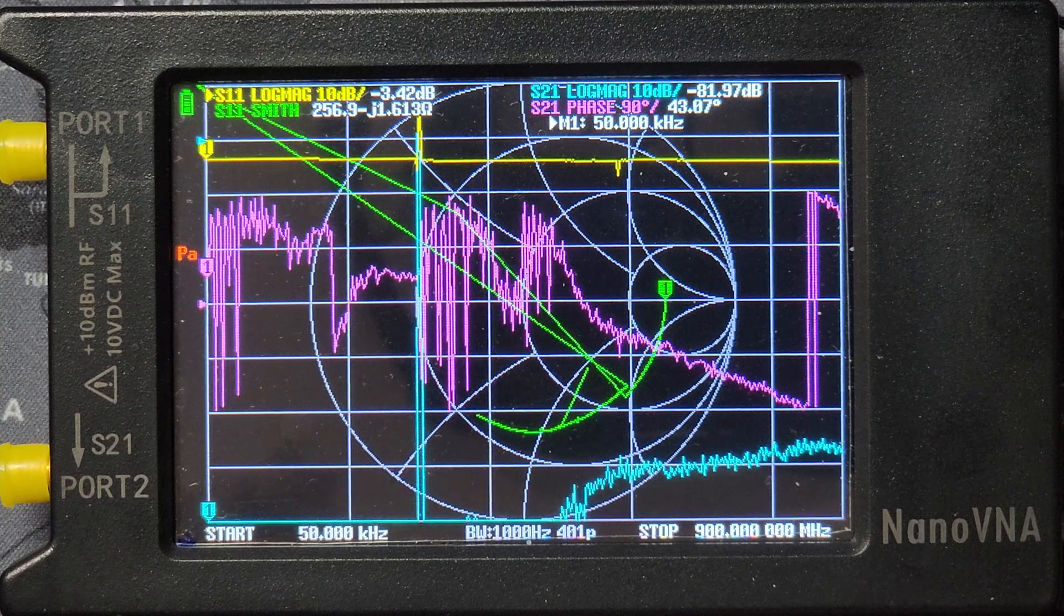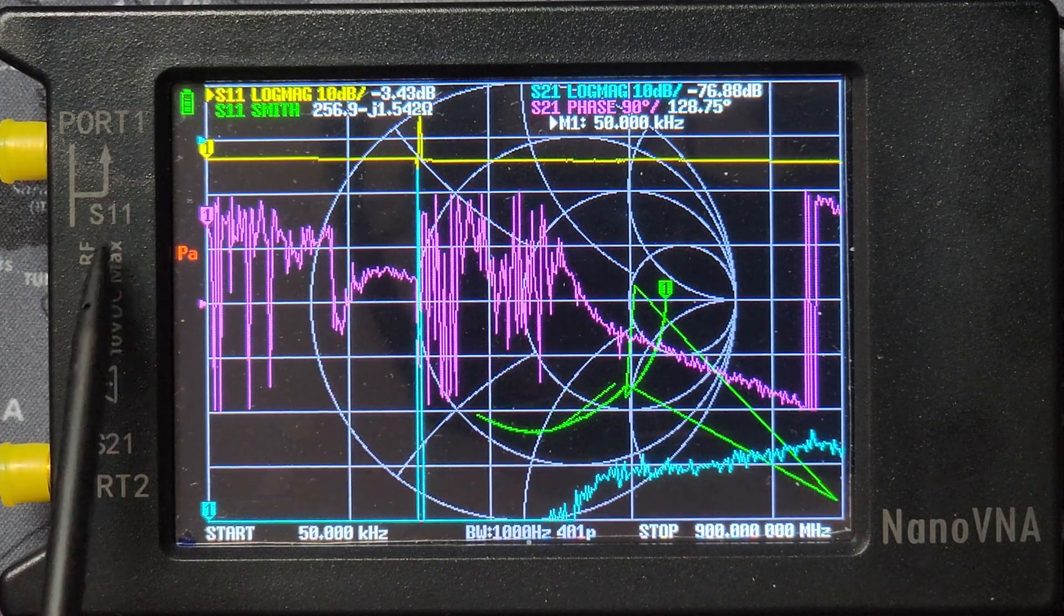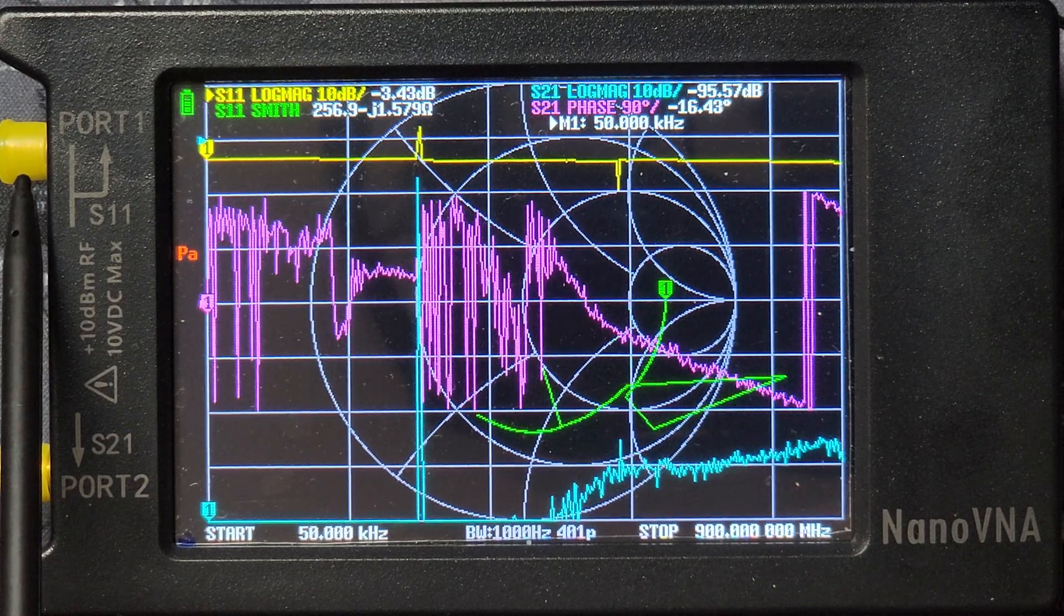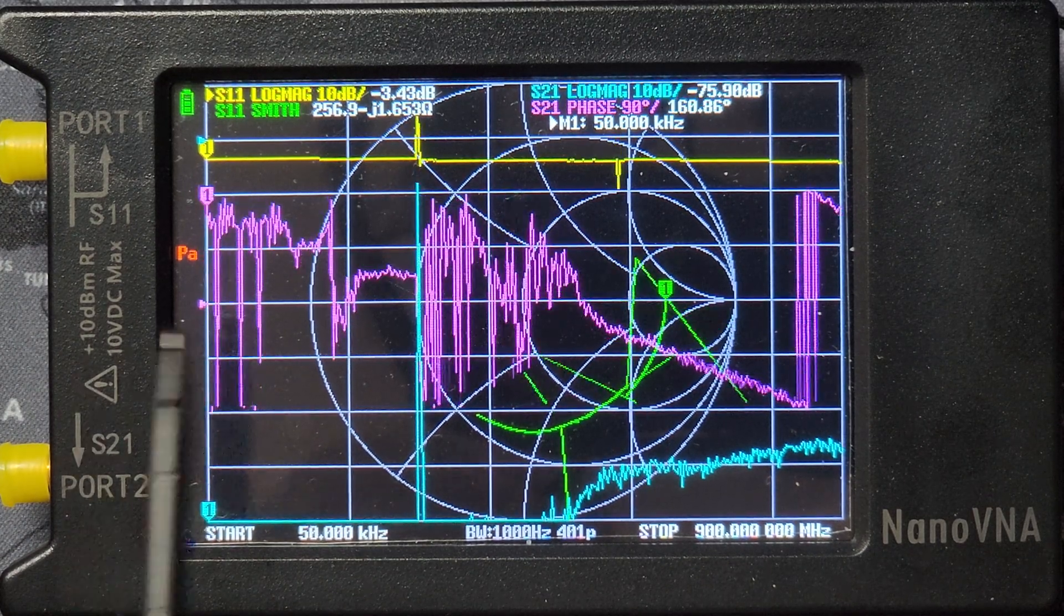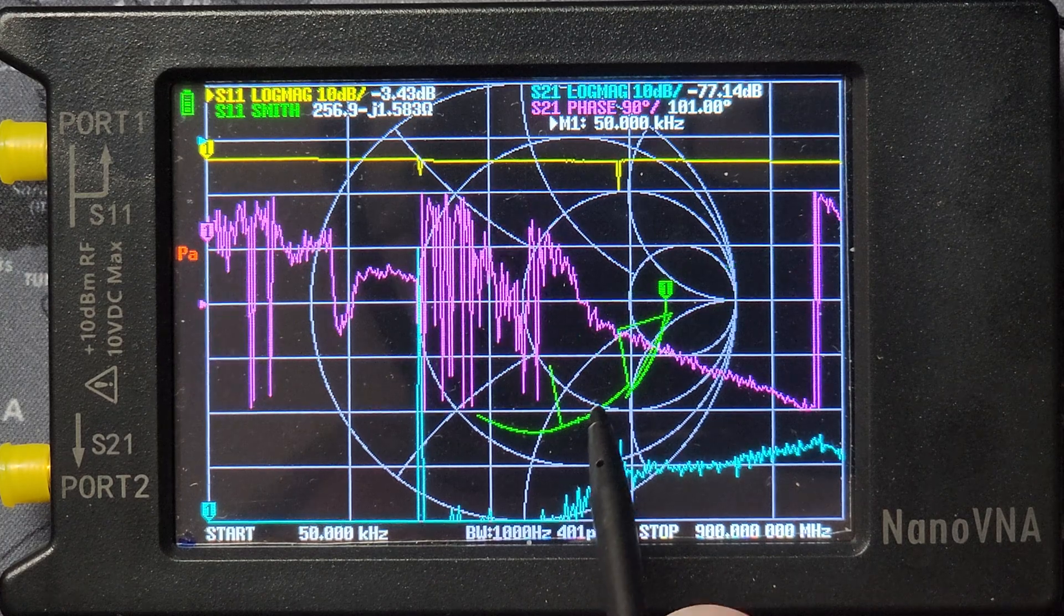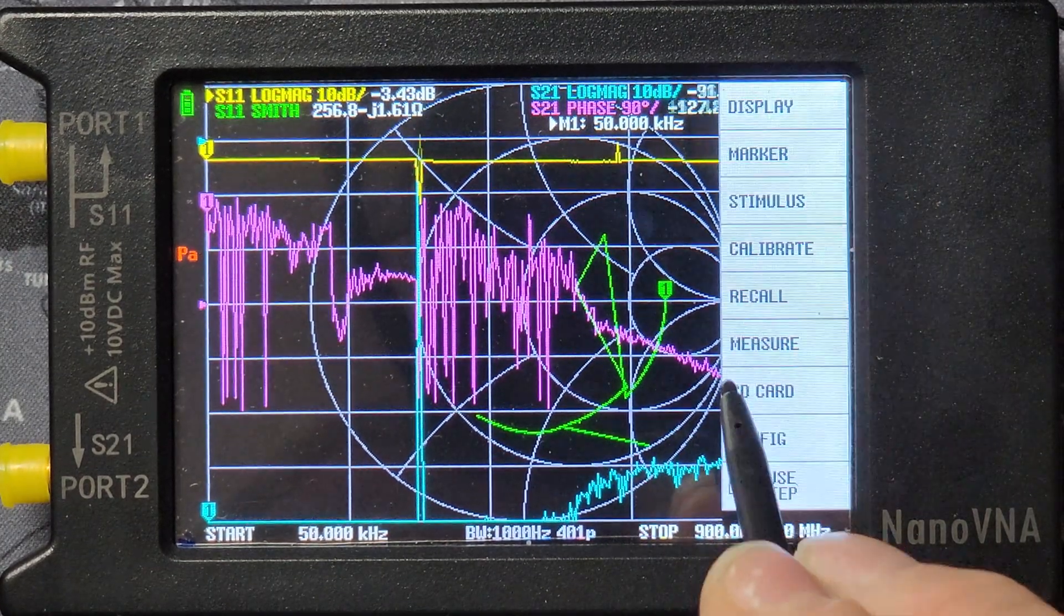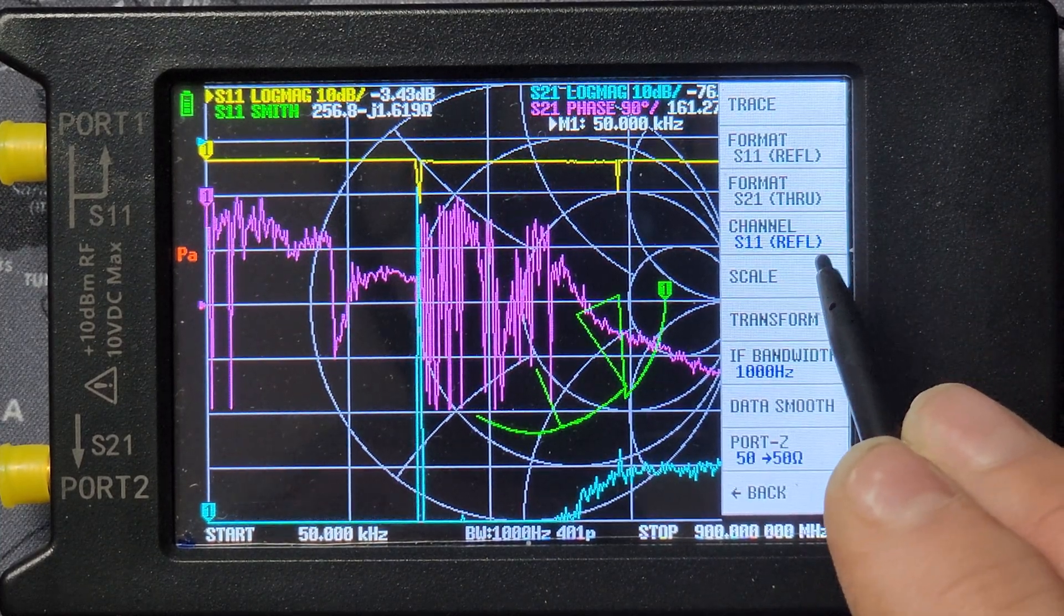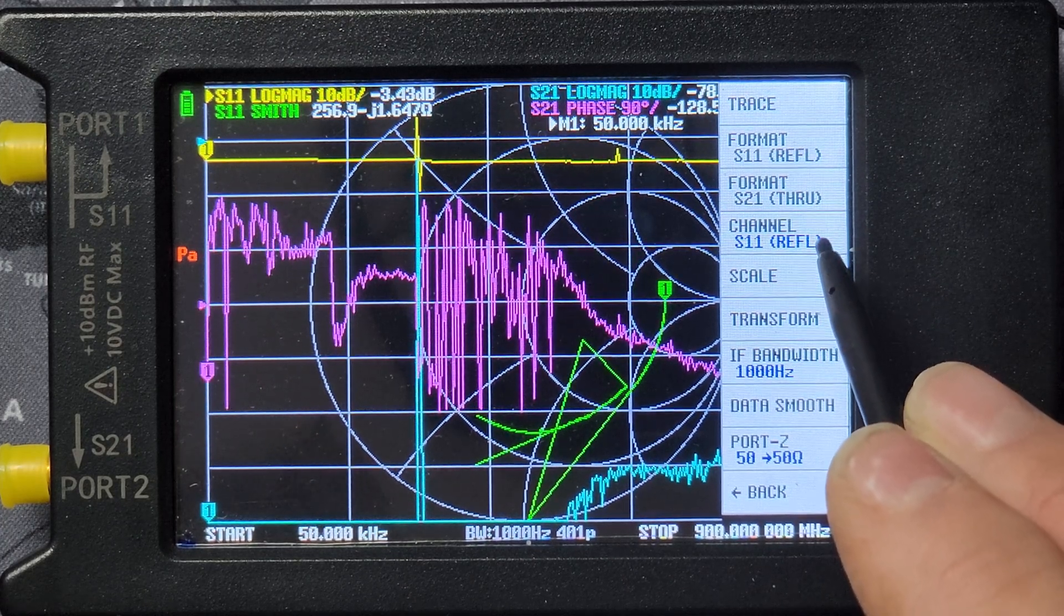Now that I got you zoomed in nicely on the NanoVNA H4, what we're going to do is go through the steps on how to set up and calibrate your NanoVNA. But first, one of the first steps you want to do is make sure you're on the right port. Now we want to be on port 1 or S11, which is this top port right here. To confirm that we're still on that correct channel, you want to tap the screen and go to display. And check out what channel you are on and I am on the correct one, which is S11 or Reflect.